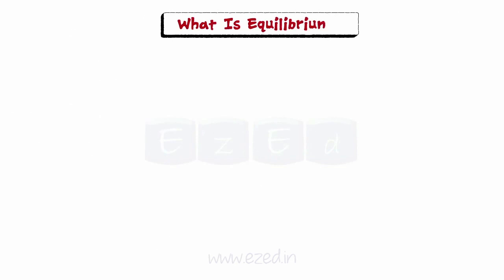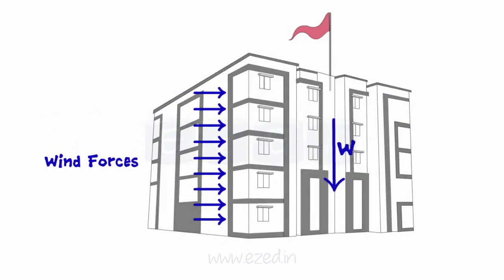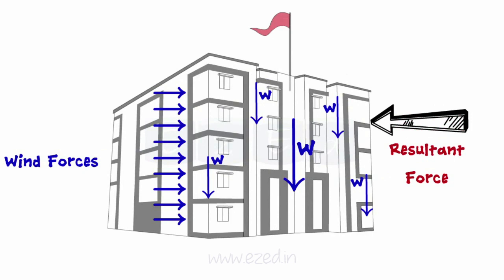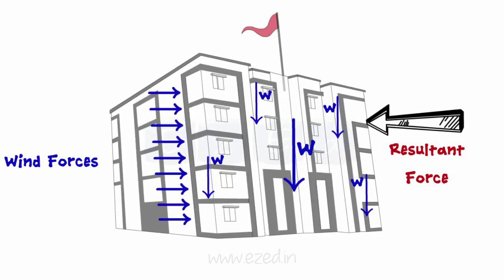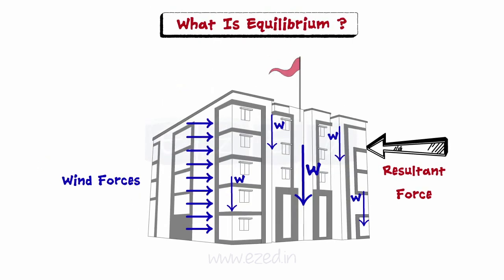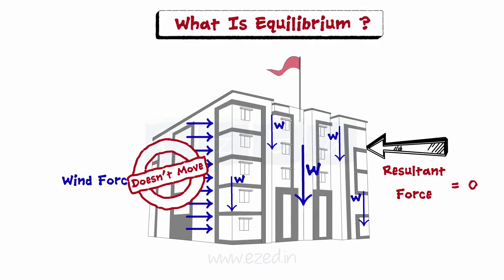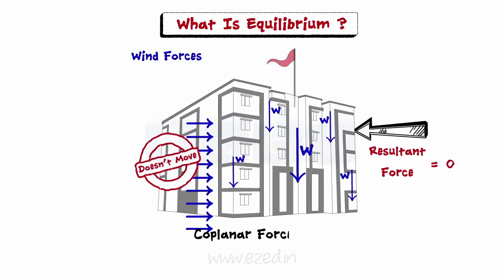Let us first take a look at equilibrium. Consider a building. A number of forces are acting on it, like the wind forces, self-weights, weight of occupants, etc. Because of all these forces, a resultant will definitely act on the building. Therefore, by Newton's second law of motion, the whole building must move in the direction of the resultant. But the building is still stationary — it doesn't move. This is because the building is designed in such a way that the resultant force acting on it is zero. Hence, the building doesn't move. This state of the building under a zero resultant force is known as the equilibrium of forces. For a coplanar force system to be in equilibrium, the resultant of the force system should be zero.